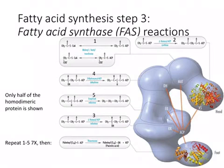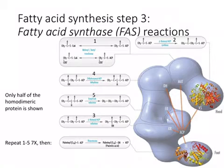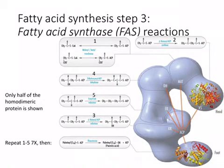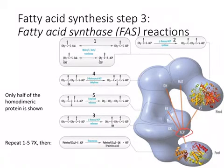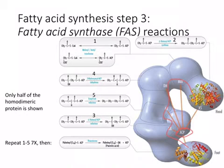All of these steps are carried out by one amazing enzyme called fatty acid synthase, which has many different subunits. An image shows all the different reactions catalyzed by this one enzyme. It functions as a homodimer, and the growing fatty acid is attached at the acyl carrier protein, which essentially swings around the substrate to all these different active sites, so this series of five different reactions can occur.